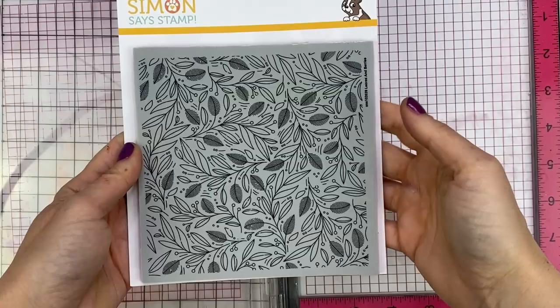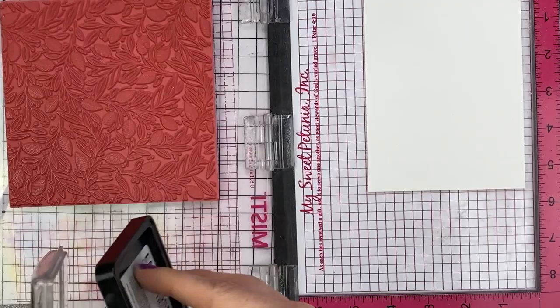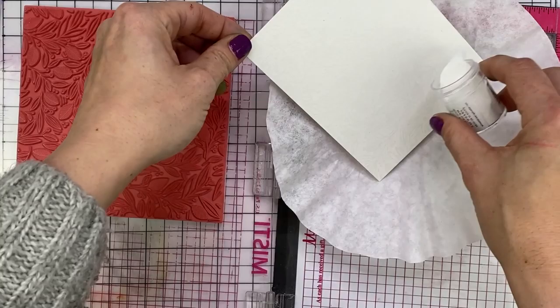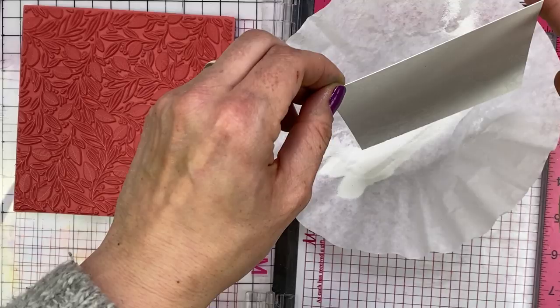Now for my next card, I'm going to be using the leaves and berries background by Simon Says Stamp. You might have seen this in my video last week. I'd really love this stamp. It's so versatile, it's great, it looks Christmasy but it's not Christmasy.